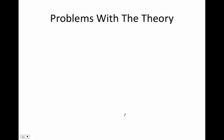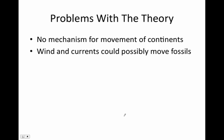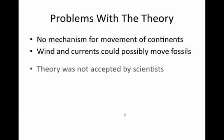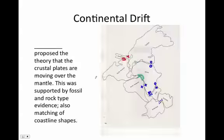However, there were some gaps or problems with Wegener's theory. He couldn't tell people what mechanism was causing the continents to drift apart. Wind and currents could have possibly moved those fossils instead. The theory wasn't accepted by many scientists. To sum it up, his evidence included similar fossils across the oceans, continents fitting like puzzle pieces, and mountain and rock evidence.